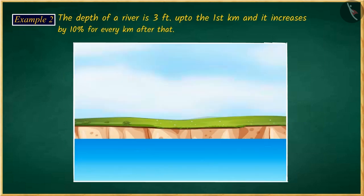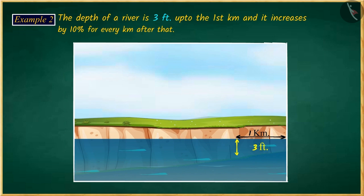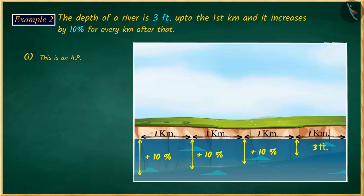Let's see one more example. The depth of a river is 3 feet up to the first kilometer, and then with every kilometer, its depth increases by 10%. Will the obtained series be an arithmetic progression or not? Pause the video to solve the question and then match your answer.